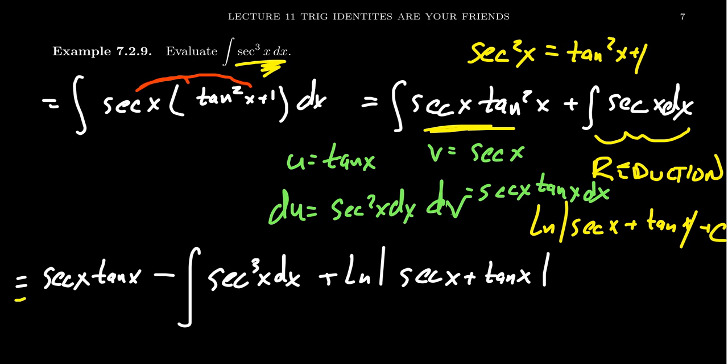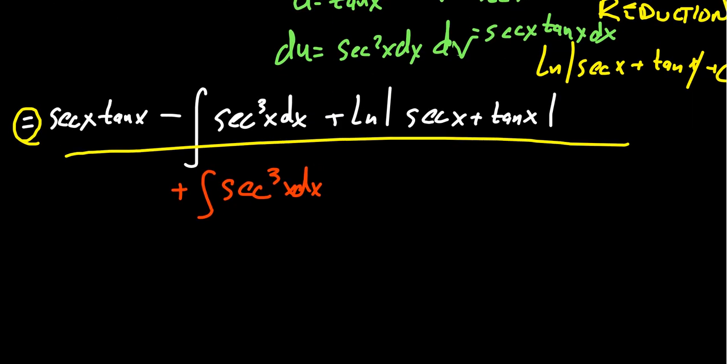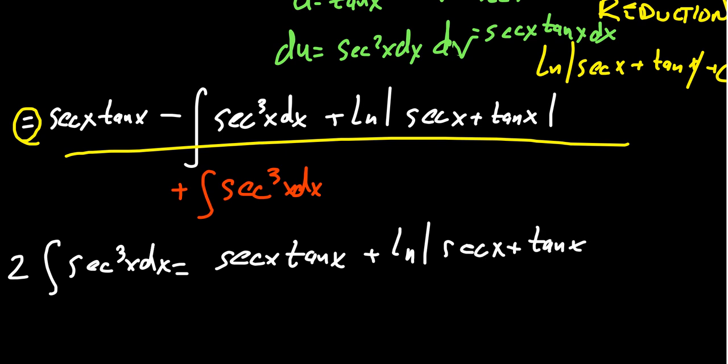Remember, this is an equation, right? The integral of secant cubed is equal to secant x tangent x minus the integral of secant cubed plus the natural log of something. If we treat this as an equation and we were to add to both sides secant cubed x dx, on the left-hand side we're going to have two times the integral of secant cubed x dx. And on the right-hand side, we'd have this secant x tangent x and this natural log of the absolute value of secant x plus tangent x plus a constant.